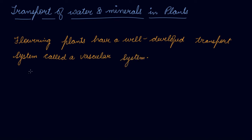The vascular system is composed of two pipe-like vessels known as xylem and phloem. Let's suppose this is a tree.